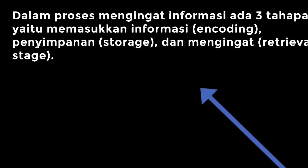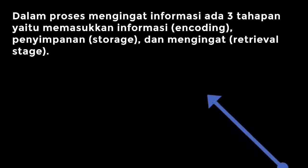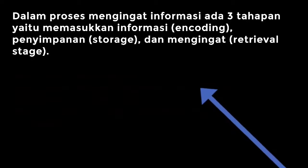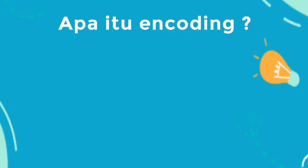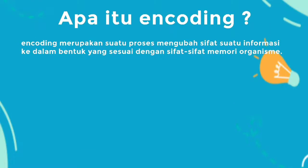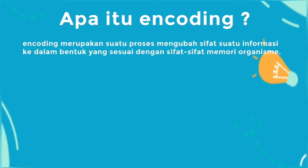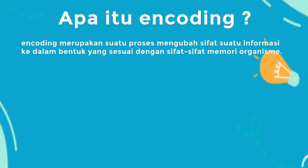In the process of remembering information, there are three stages: namely, entering information or encoding, storage, and the retrieval stage. Encoding is a process of changing the nature of information into a form that matches the memory characteristics of the organism.